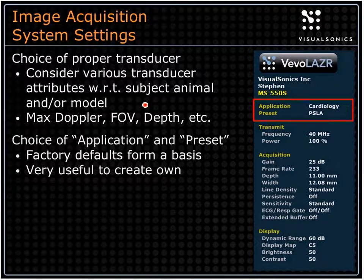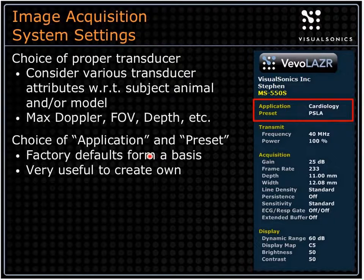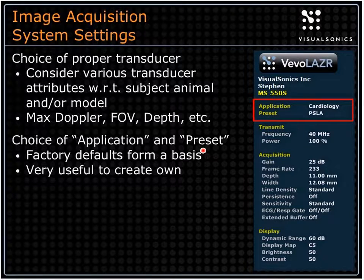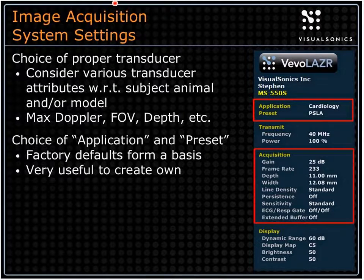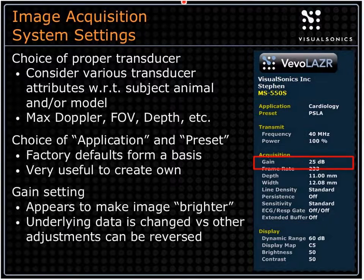All of this also applies to the 770. Transducer choice is especially important on the 770 because many transducer attributes are fixed. One thing you can do nicely on the 2100 is create custom applications and presets. You can save presets on the 2100 using a dedicated save preset button — this is very important for standardizing experiments. I really encourage people to develop presets that work for their models and have those planned ahead of time.